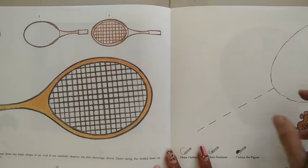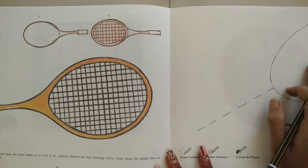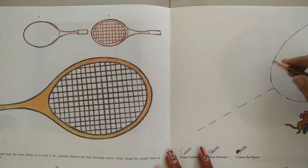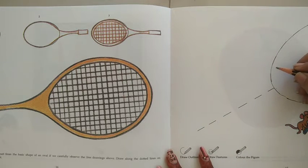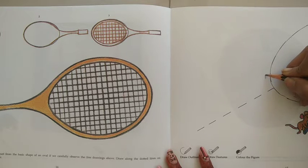First, next, here we have given the oval shape and give it a next line. Draw it. Here we have to start here.